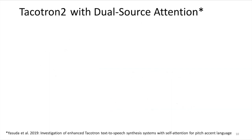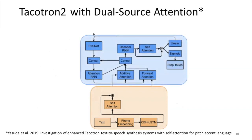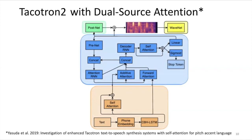Our TTS architecture is basically Tacotron 2 with dual source attention. Our encoder is similar to Tacotron 2 but a little different — instead of a CNN-based encoder, we use CBHG plus an LSTM. Our encoder has self-attention as well as forward attention. Our decoder also uses dual source attention to combine these two outputs. We have a post-net which does spectral shaping and enhancement, and the output is a mel spectrogram. We then use WaveNet to convert into a waveform.